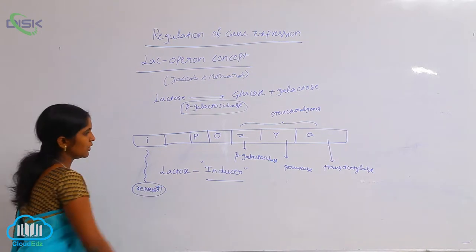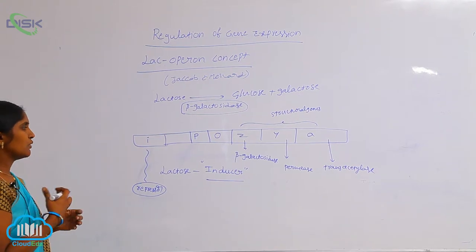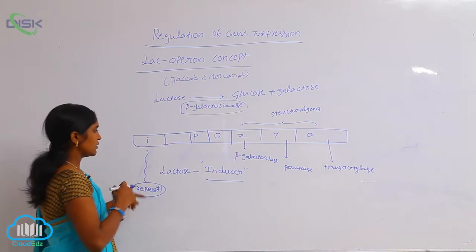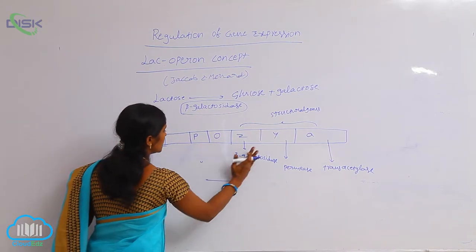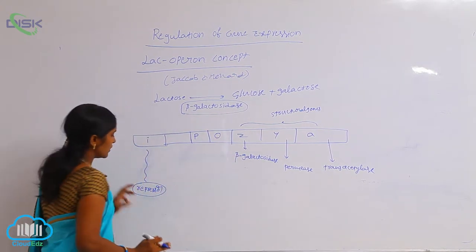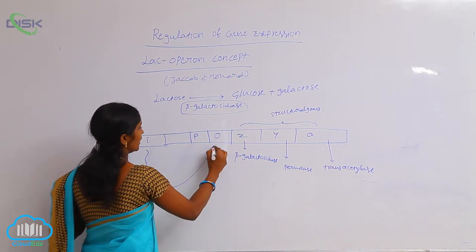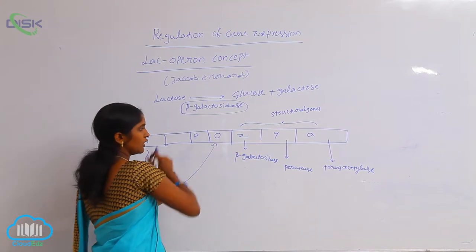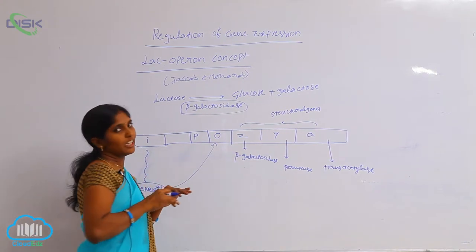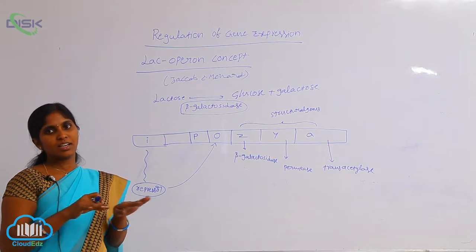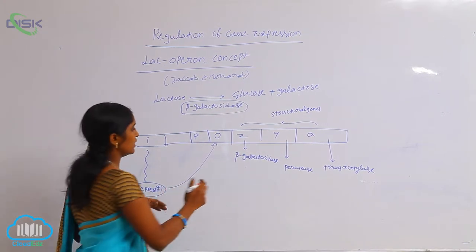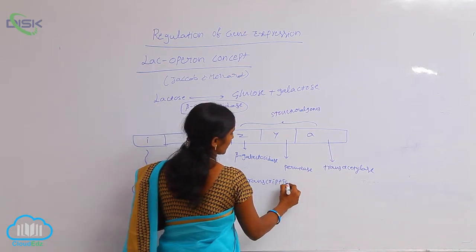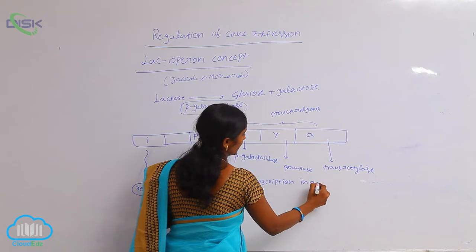Here we find two stages: in the absence of lactose, and in the presence of lactose. In the absence of lactose, the repressor protein joins with the operator region. When it is joined with the operator region, it inhibits mRNA transcription — mRNA production. So here the transcription is inhibited; it means inactive transcription.